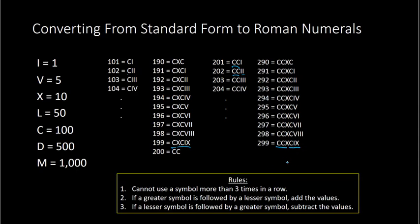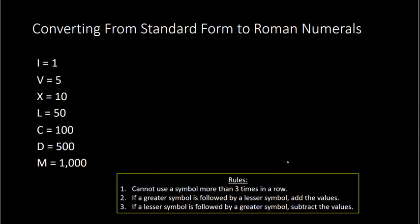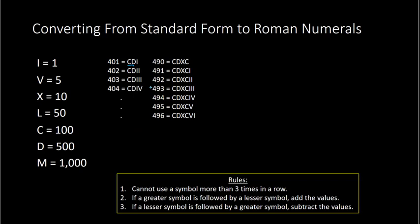For three hundred, we put three C's and then do the same thing again for three hundred one through three hundred ninety-nine. For four hundred, we cannot put four hundreds together because that breaks rule number one. So I take five hundred minus one hundred: to subtract the values we use rule number three and put C in front of D, subtracting one hundred from five hundred. So four hundred is CD. Four hundred one would be CD followed by one, four hundred two followed by two, and so on all the way through four hundred ninety-nine. And then five hundred is the letter D.